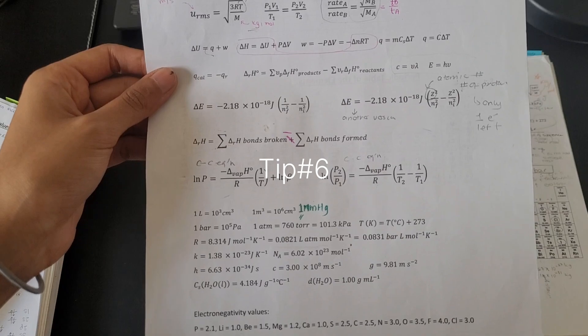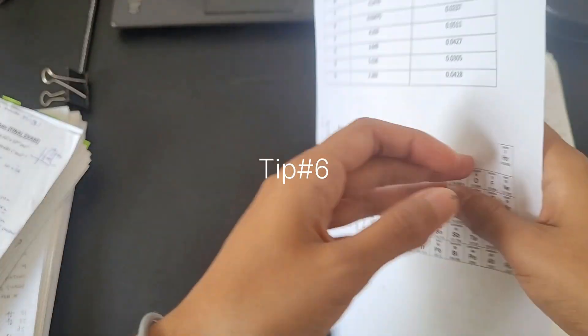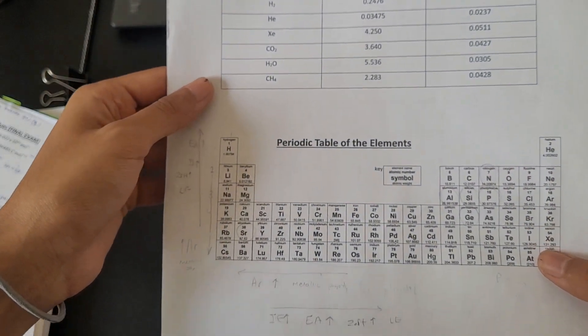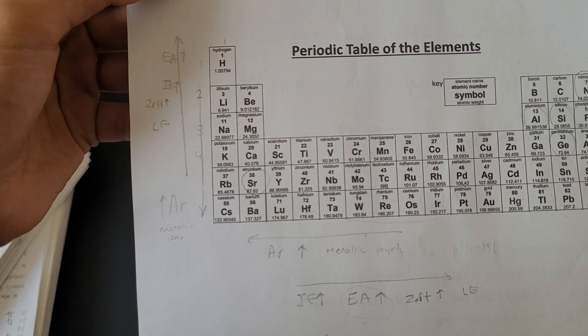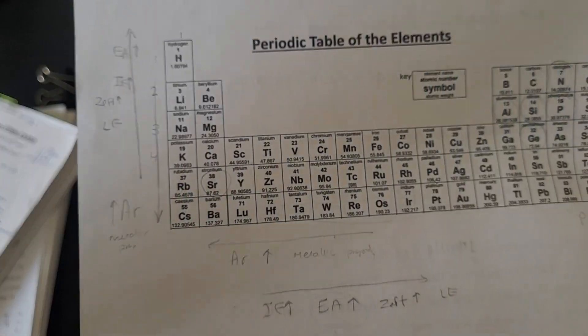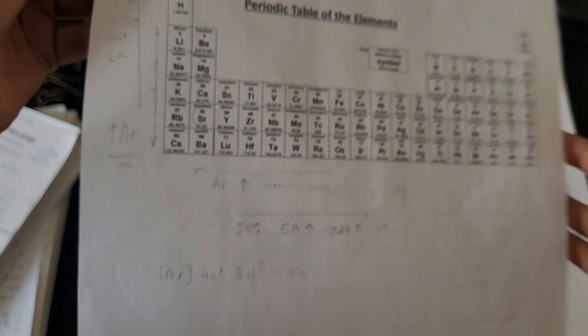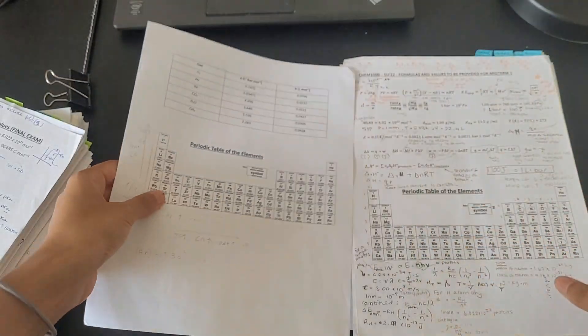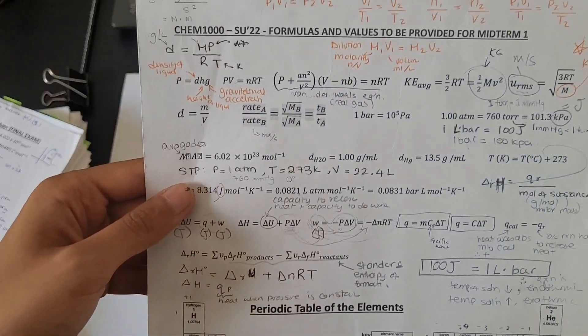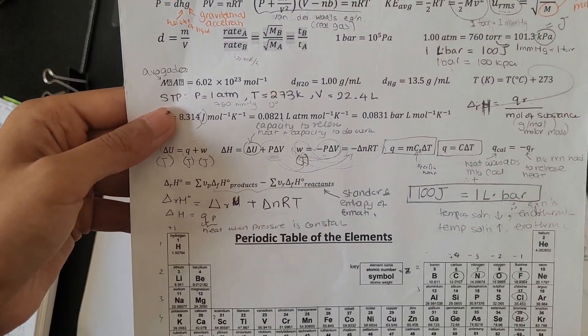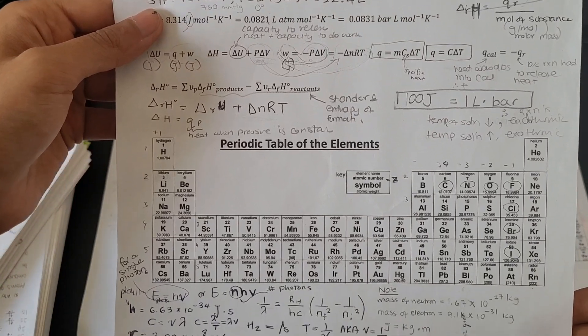Tip number six is create your own cheat sheet as you go along. Sometimes your professor may provide a formula sheet for you in advance, so you could just add those extra formulas by hand on the paper. This was super helpful when preparing for my exams because every time I would start practicing, I wouldn't have to flip through a billion pages to find that one formula that I really need to solve that question. And it also helped me memorize formulas for the exam.